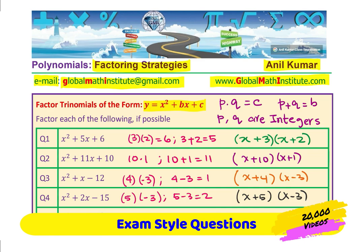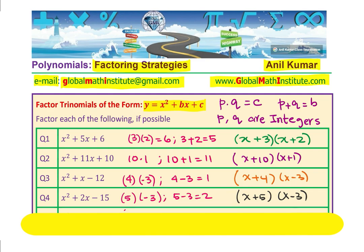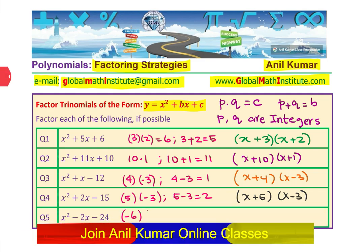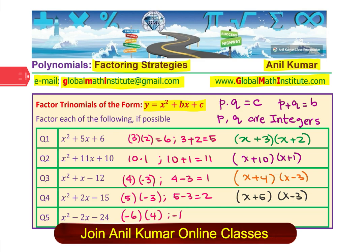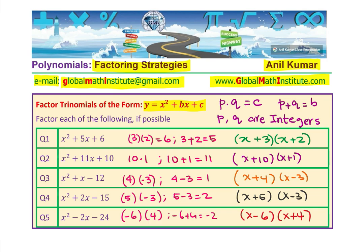24, we want 24 and the sum is minus 2. That means 6 and 4 can work, but we need minus. Bigger number is negative. We have minus 6 and plus 4. Minus 6 plus 4 is equals to minus 2. That works for us. We can now write it down as x minus 6 times x plus 4.